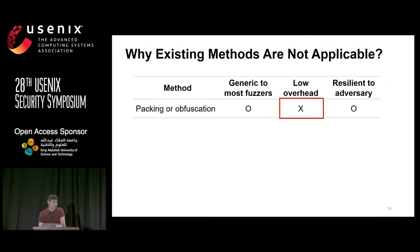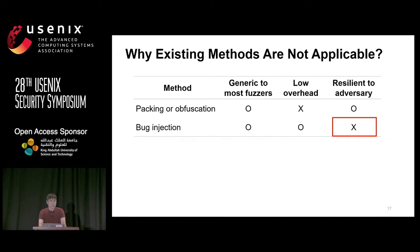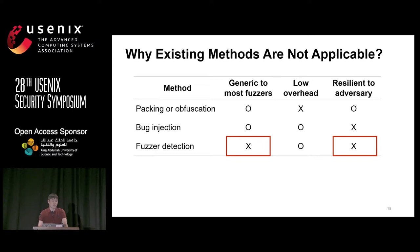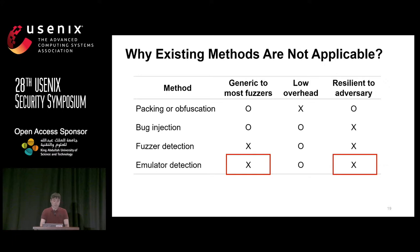Now let's talk about possible solutions for anti-fuzzing. Packing or obfuscation could be one candidate because it slows fuzzing execution, but it also slows execution for normal users. Bug injection tries to inject many unexploitable bugs into the binary, but its static pattern makes it not resilient to adversaries. Fuzzer detection identifies the fuzzer process and shows different behavior, but it's not generic and not resilient due to static patterns. Emulator detection infers whether a process runs via QEMU — similar issues apply.